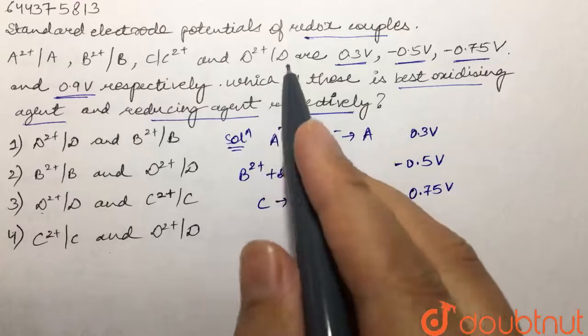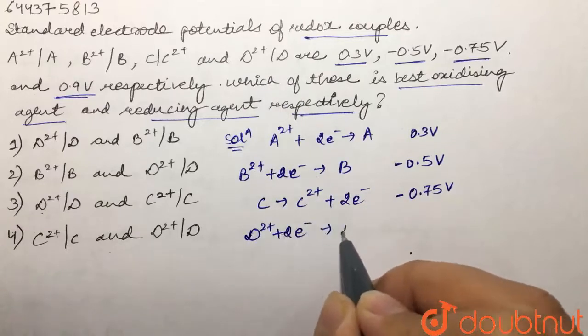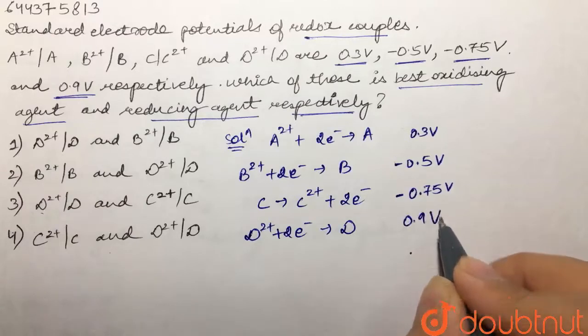Then we have D²⁺ to D. This means D²⁺ after gain of 2 electrons is forming D, and the electrode potential for this is 0.9V.